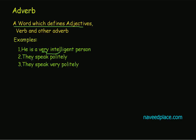If we see the second example, we can say 'they speak politely.' So 'politely' is defining the verb. And if we say 'they speak very politely,' then 'very' is definitely defining the adverb 'politely'.